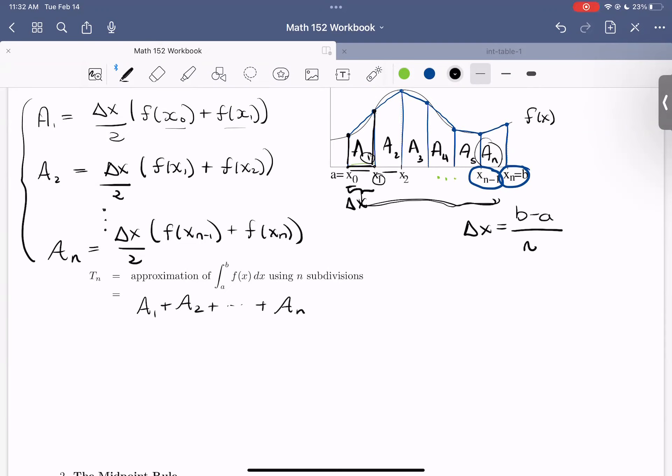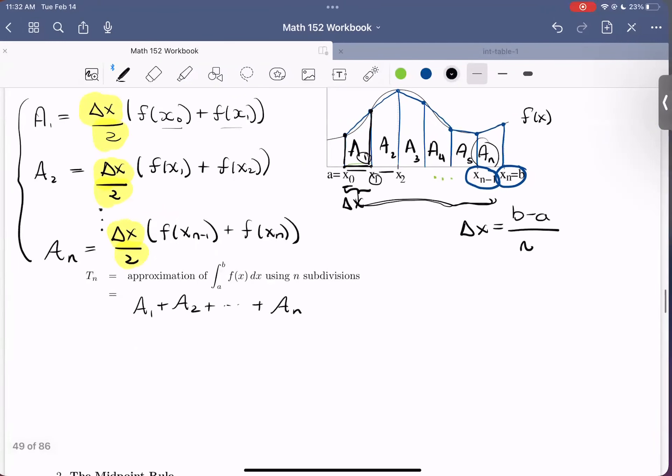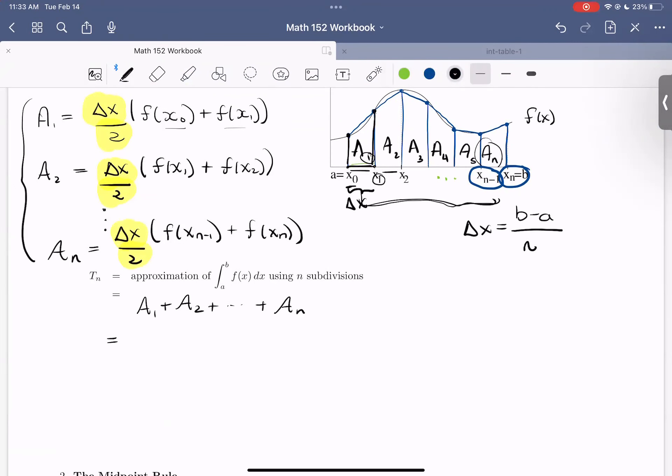So notice each A term has a delta X over two in front of it or involved in it. So I can factor out that delta X over two from each term. So what do I have when I do that?